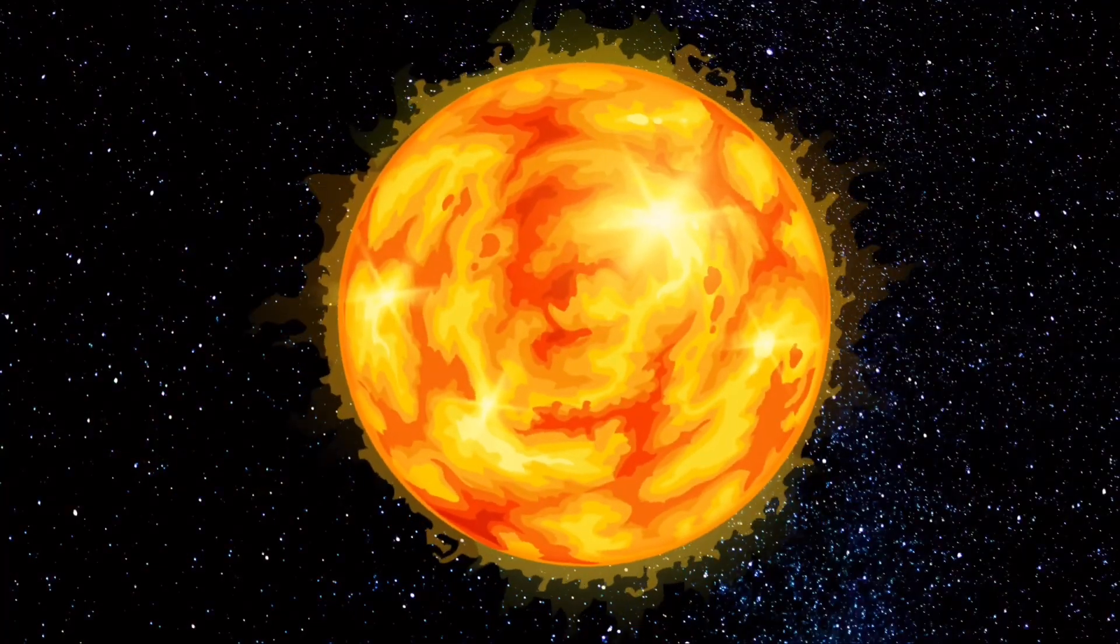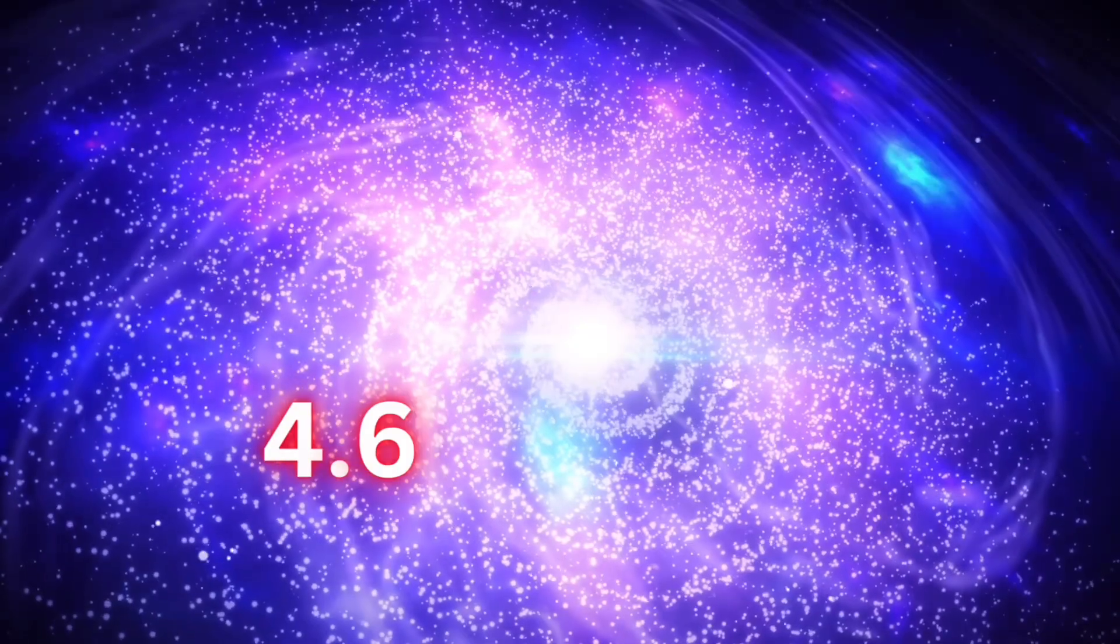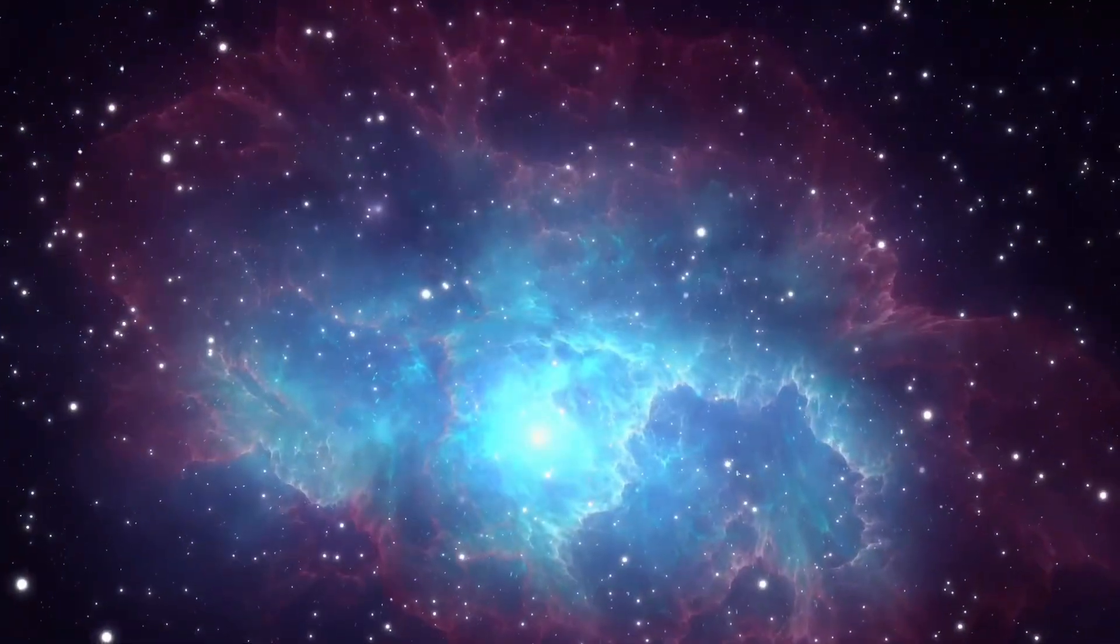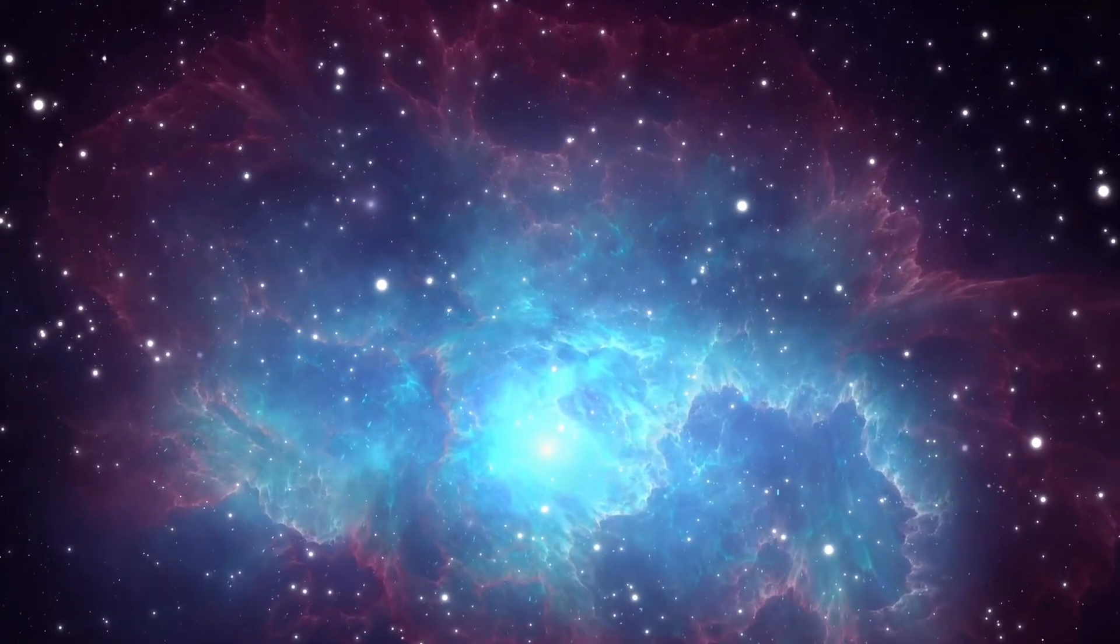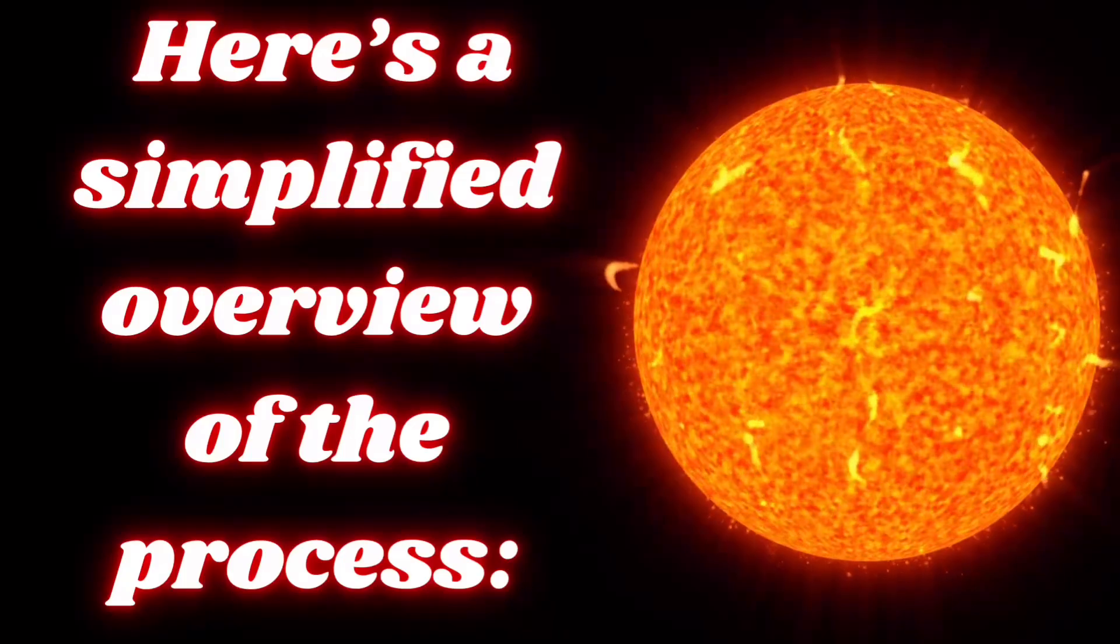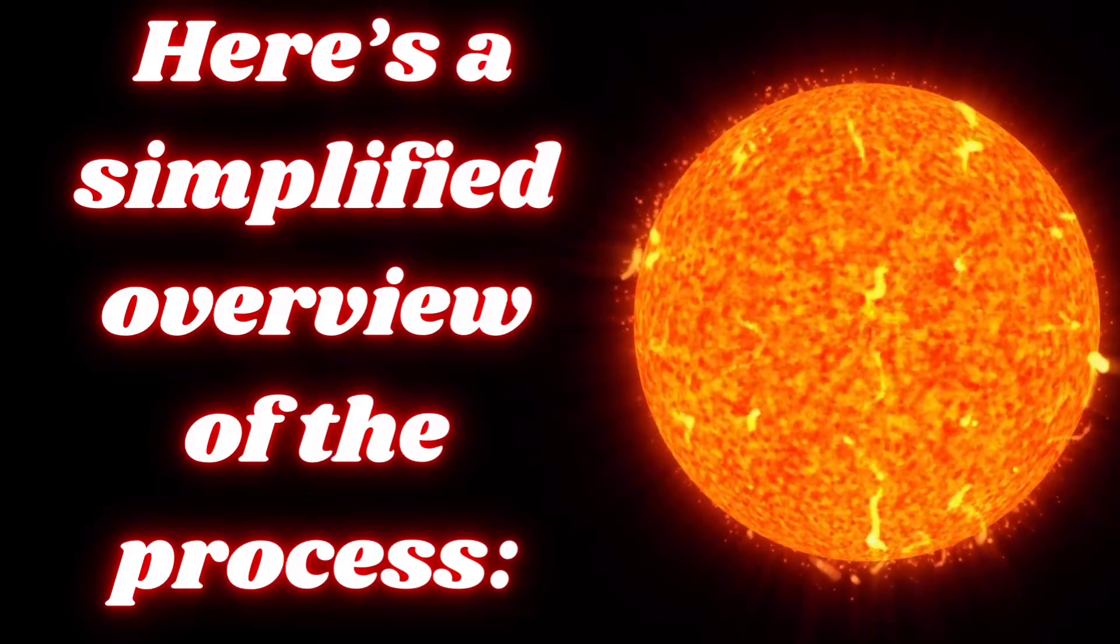The formation of the Sun began about 4.6 billion years ago in a region of a giant molecular cloud, a cold dense part of space filled with gas and dust. Here's a simplified overview of this process.